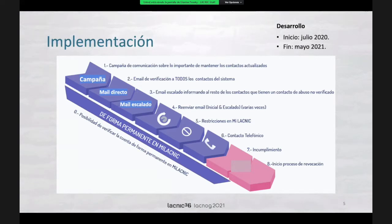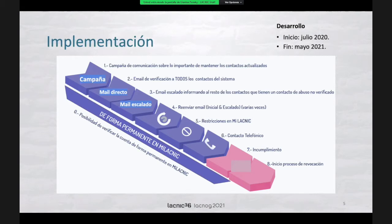Then we are going to start with a number of phone calls to warn you again of this situation. And finally, if the person persists without validation, then we would trigger the revoking process. We defined this process as friendly as possible. The idea is not to recover resources under any circumstances, but to help enforce the policy so that the organizations may validate their abuse contact.